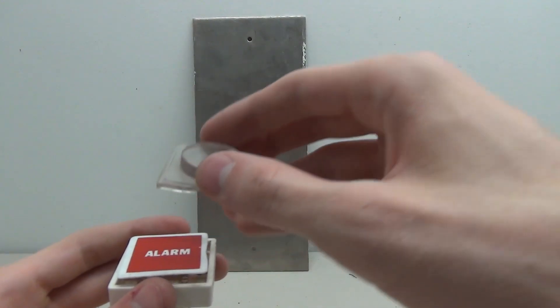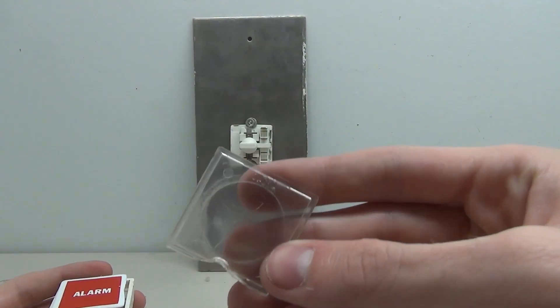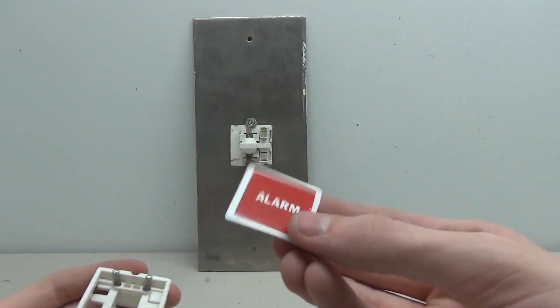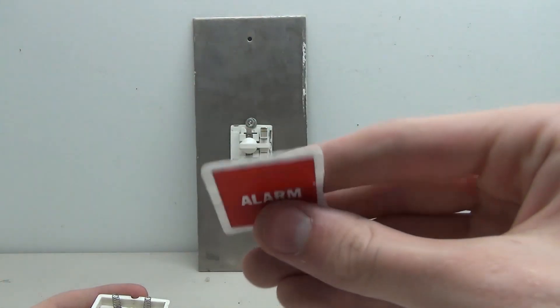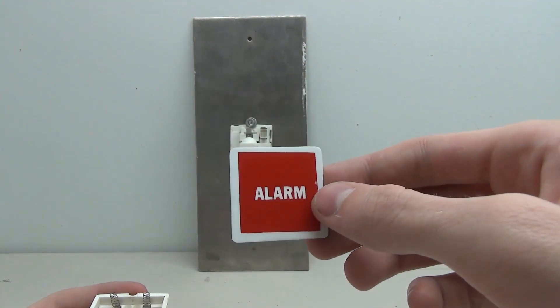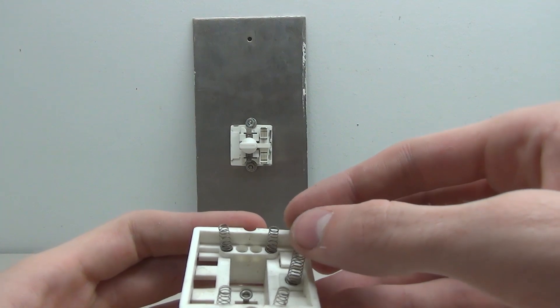So first thing we can do is take off the ring, and here's the ring. Then we have the actual button. As you can see, here is a pretty solid chunk of plastic. And then we have the decal or the label. You can see the label is its own little thing, so you can switch this out with really whatever you want. This one says alarm.